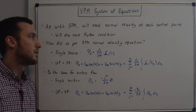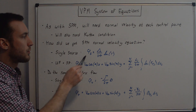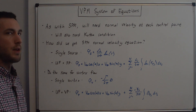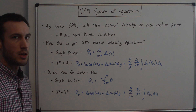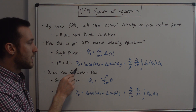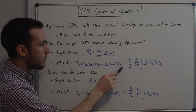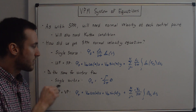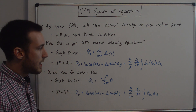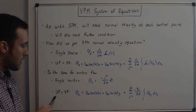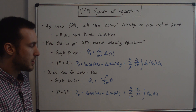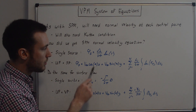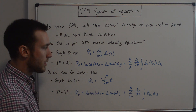So how did we get the source panel method normal velocity equation? We started with the expression for the velocity potential due to a single source as capital lambda over 2 pi times natural log of r, then combined a uniform flow with source panels approximating the airfoil — the velocity potential induced at point p due to the uniform flow and the source panels. We can do the same thing for vortex flow. For a single vortex, the velocity potential equals negative capital gamma over 2 pi times theta, and we can combine uniform flow plus vortex panels approximating the airfoil, where the velocity potential induced at point p equals the uniform flow contribution plus the vortex panel contribution.